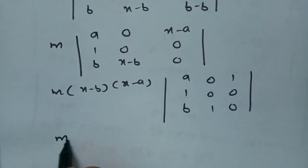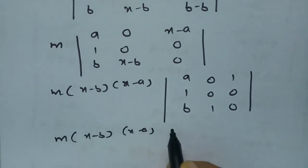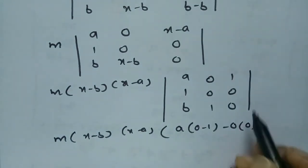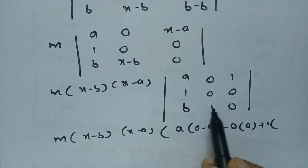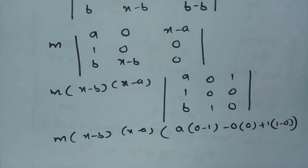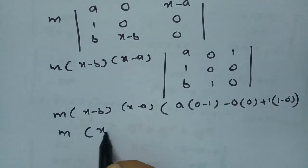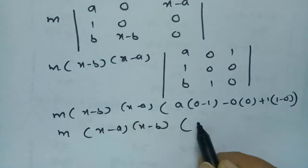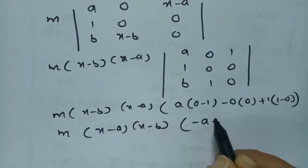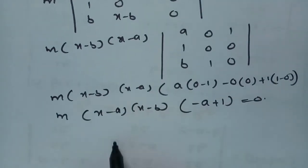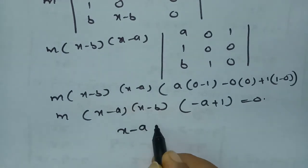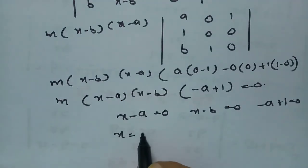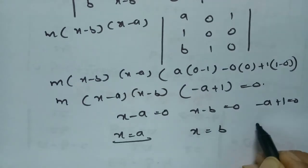Taking (x−b) common from column 2 and (x−a) common from column 3: m(x−b)(x−a) times: a, 1, b / 0, 0, 1 / 0, 1, 0. Expanding the determinant gives m(x−a)(x−b)[1·(0−1) − ... + 1] = m(x−a)(x−b)(1−a) = 0. So x = a, x = b, or a = 1.